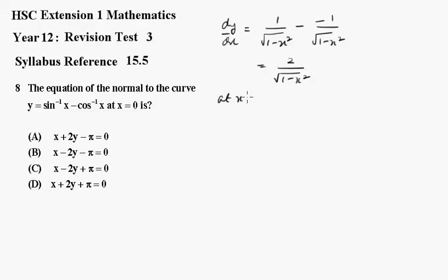So at x equals 0, we can see that the gradient is equal to 2 over the square root of 1, which is just 2.